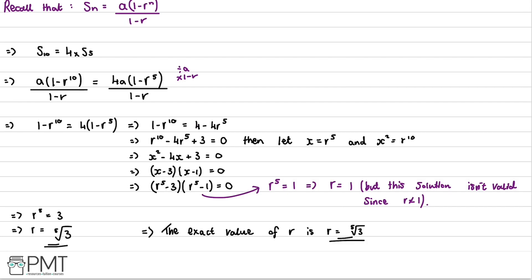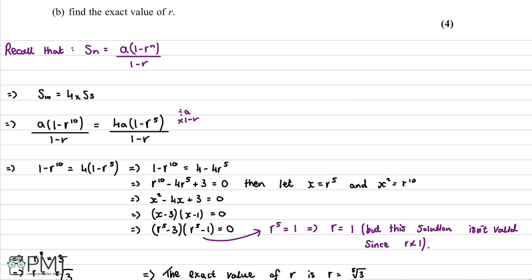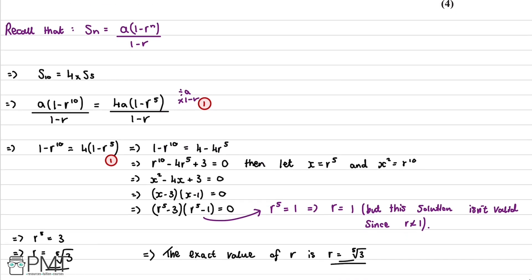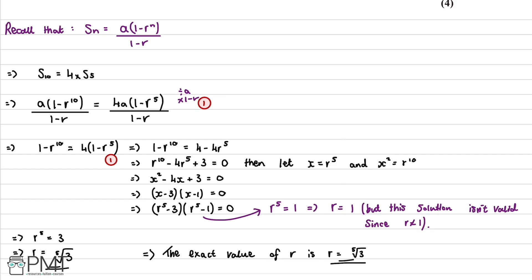The marks are awarded as follows: first mark for the correct strategy producing an equation with r to the 10 and r to the 5; second mark for cancelling correctly to reach a single-line equation with no fractions; third mark for correct algebra solving for r; and the fourth and final mark for omitting the r equals 1 solution and concluding that the exact value of r is the fifth root of 3.